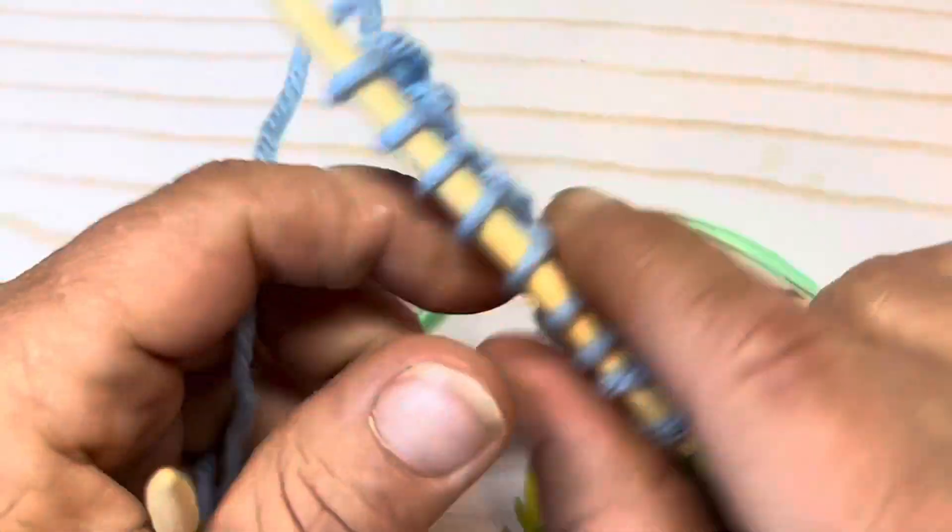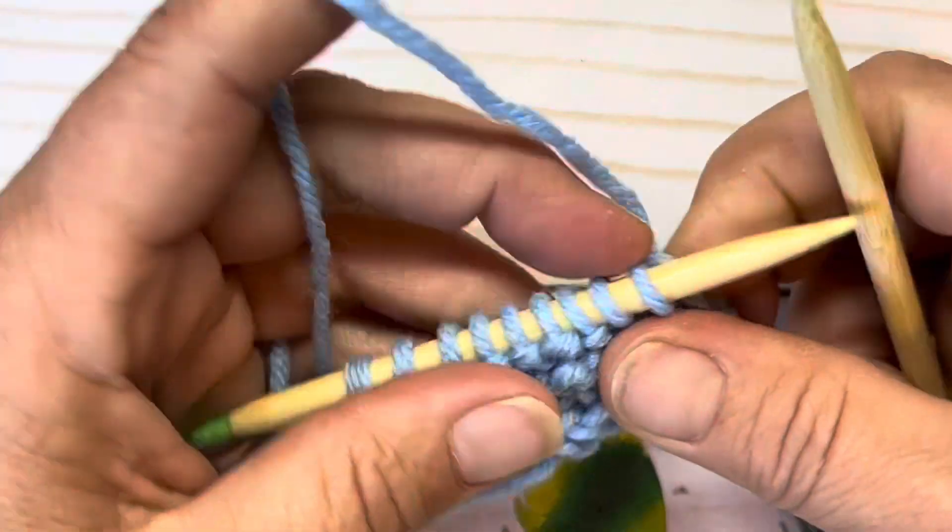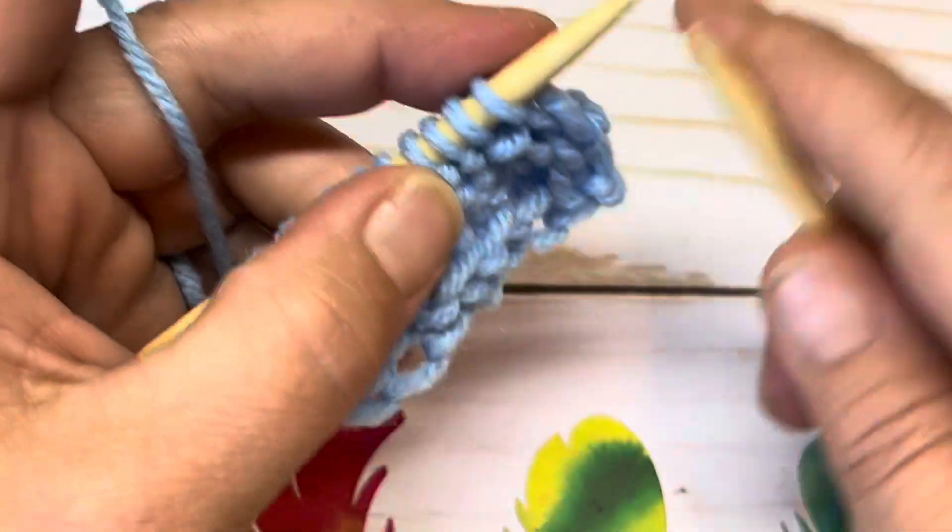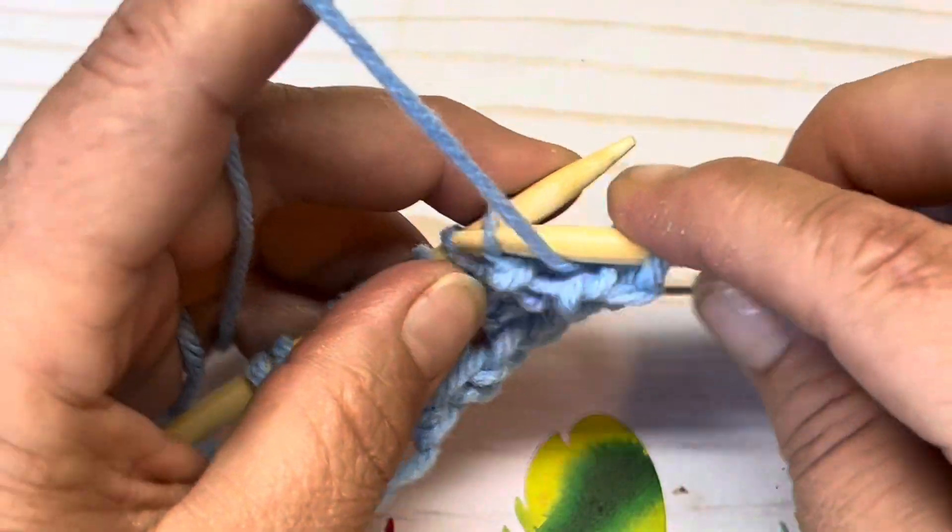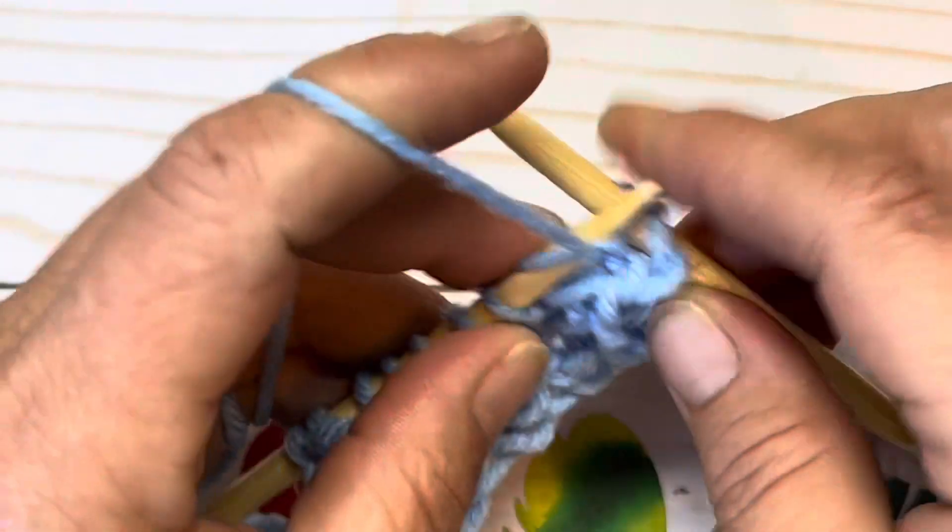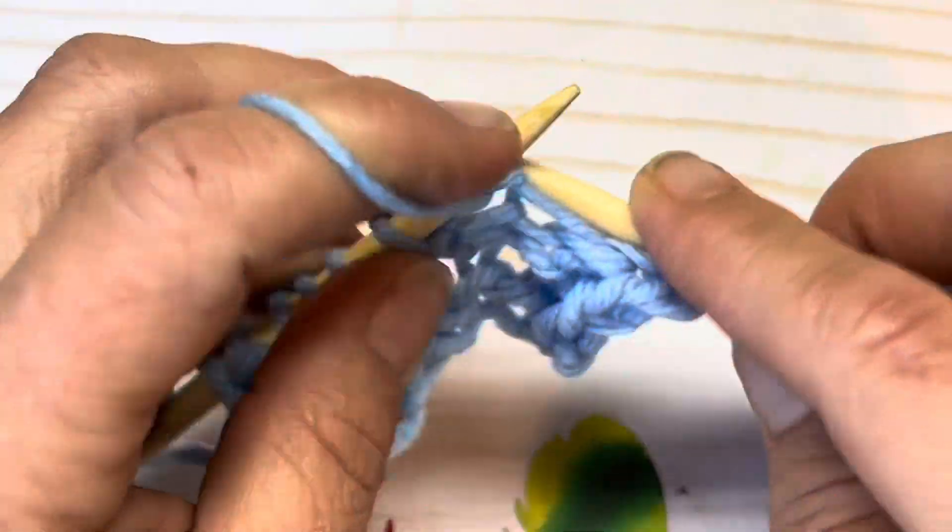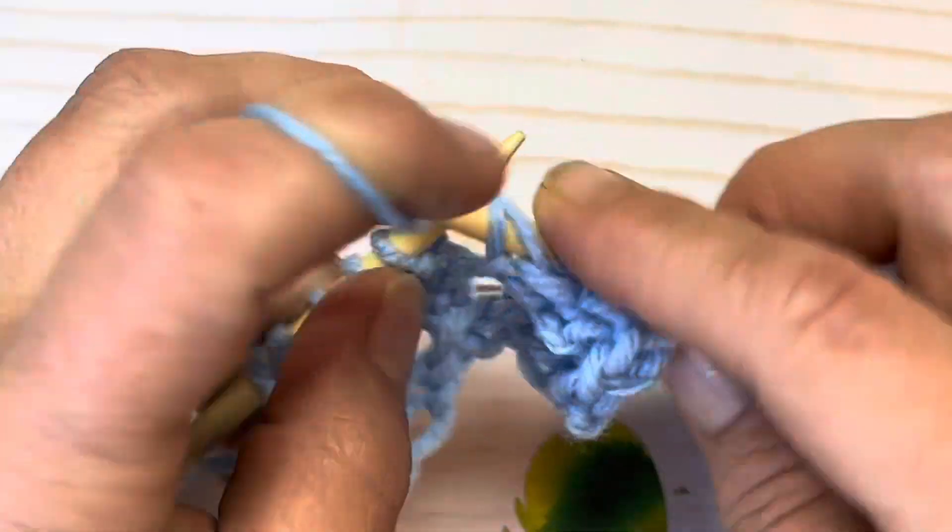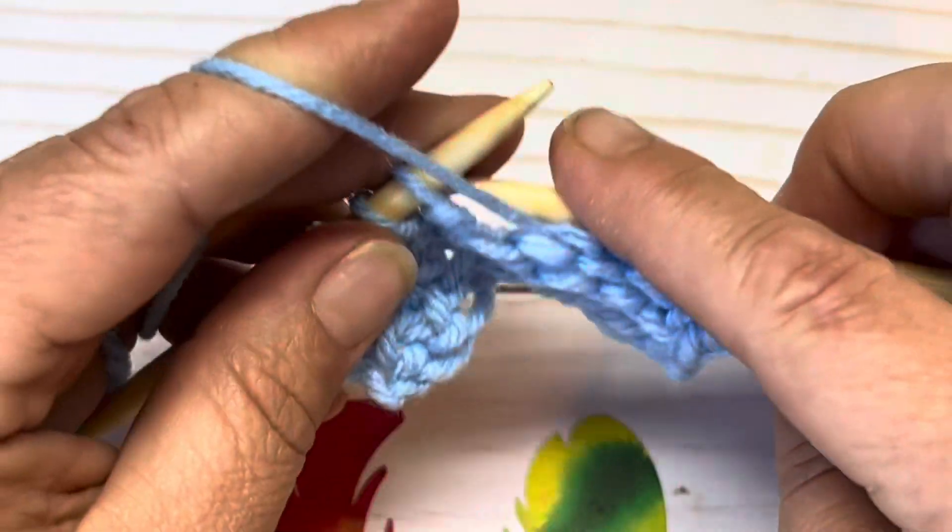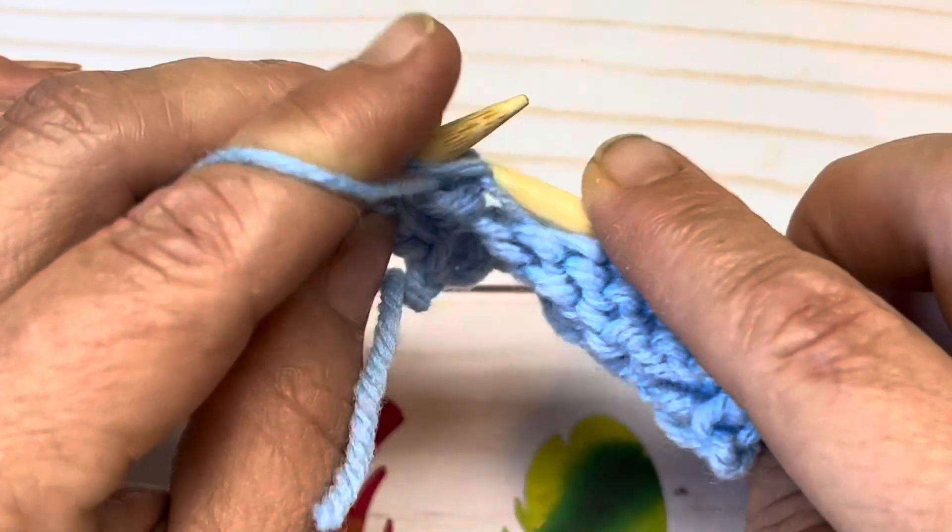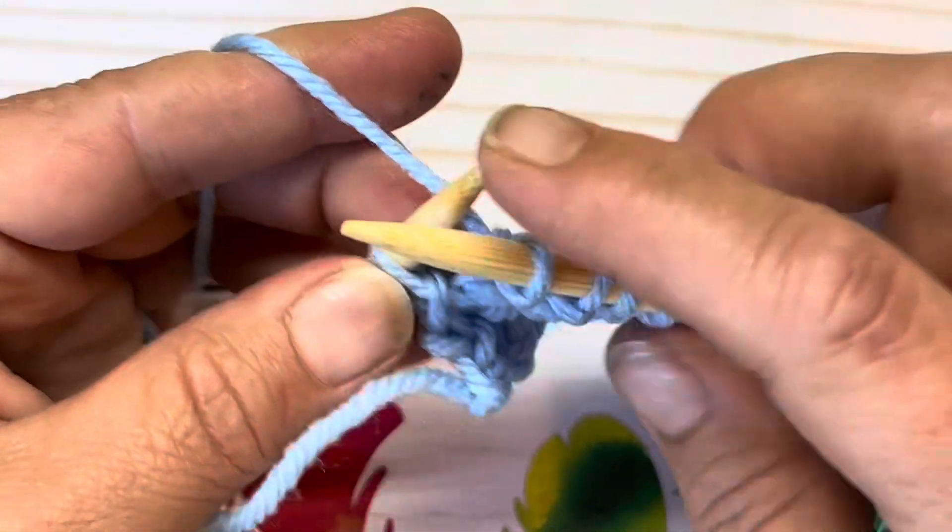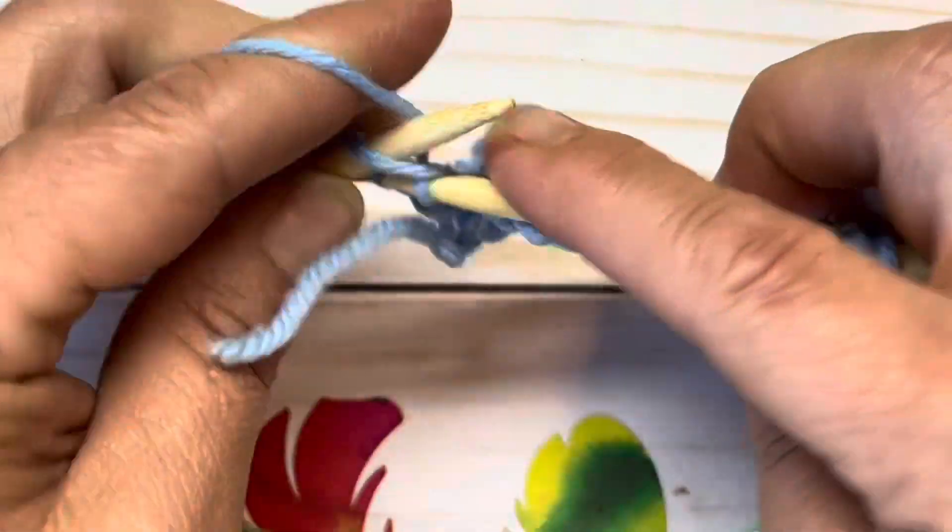Now we're going to turn our work over for row four. Row four, you're going to knit the first one, purl seven - one, two, three, four, five, six, and seven - and now you're going to knit that last stitch.